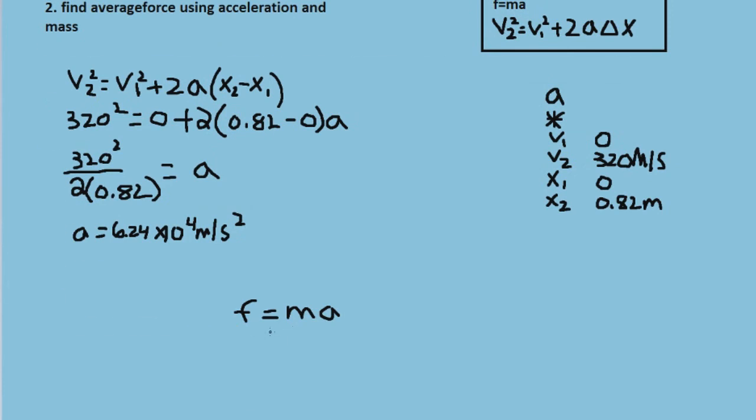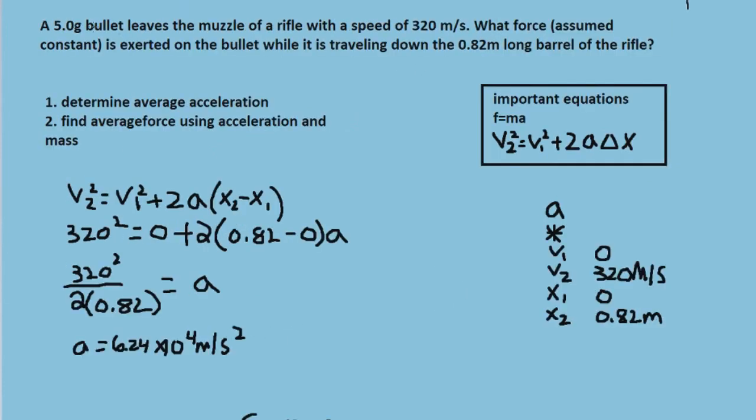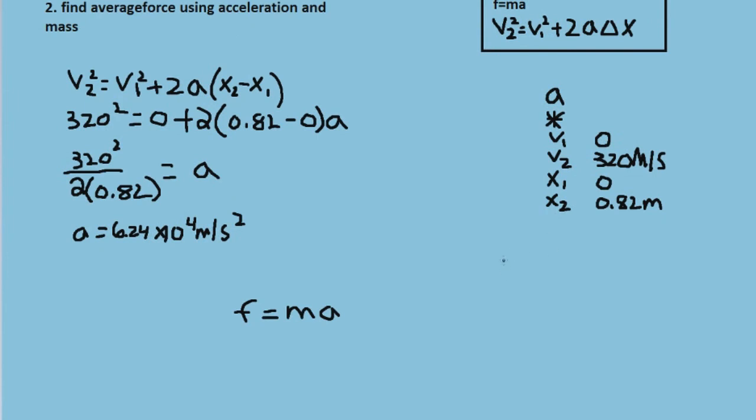So we want to find the force, and we're given a mass of 5 grams. We need to convert that to kilograms. So it's going to be 1 kilogram over 1,000 grams. That's going to give us 0.005 kg, because when we're dealing with mass and acceleration, we're going to be using meters and kilograms.